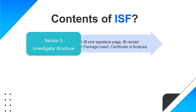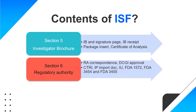Section 6 contains all documents regarding the regulatory authority. Any correspondence between the regulatory authority and the sponsor or CRO is filed in section 6. DCGI approval is required for the trial, and once approved, the trial is registered in the Clinical Trial Registry of India (CTRI). That CTRI document is present in section 6.